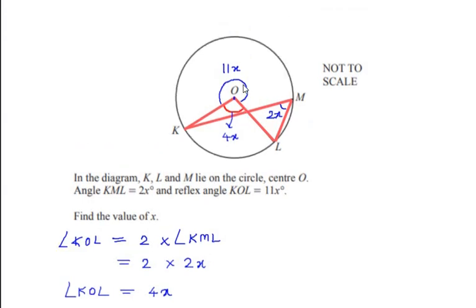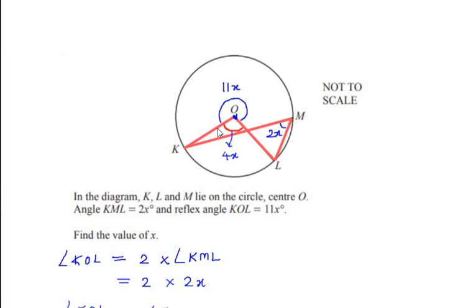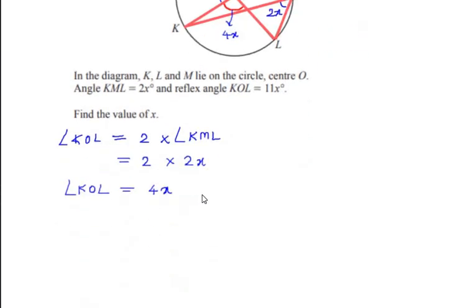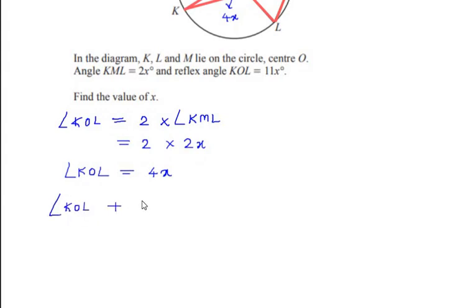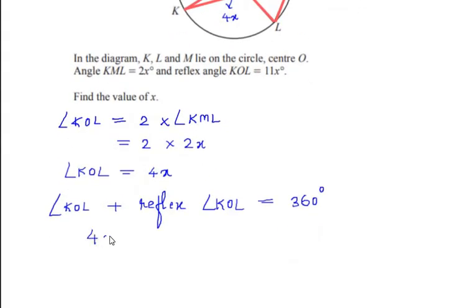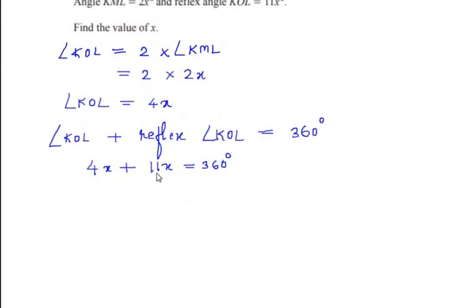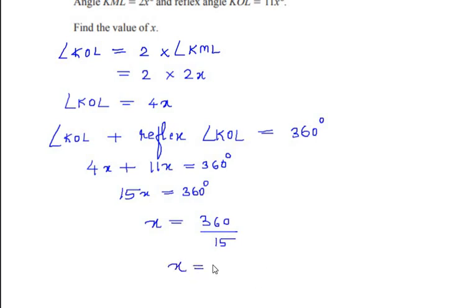Now at point O, a complete circle is made which is equal to 360 degrees. So we can write angle KOL plus reflex angle KOL equals 360 degrees. We got angle KOL as 4x and we have been given the reflex angle as 11x, so 4x plus 11x equals 360 degrees. This gives us 15x equals 360 degrees, so x equals 360 over 15, and the value of x is 24 degrees.